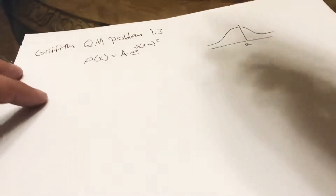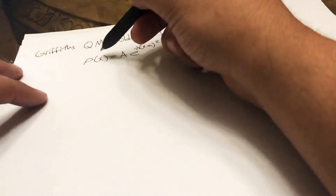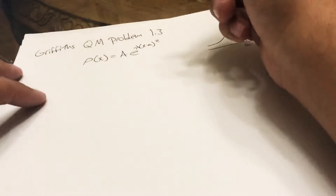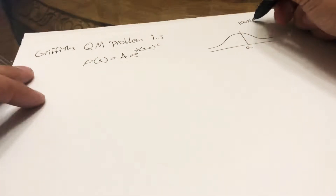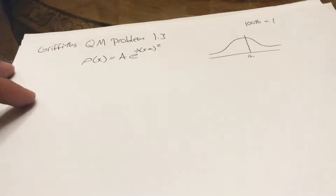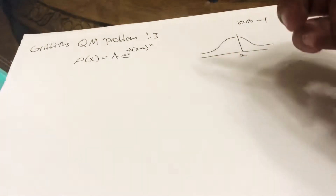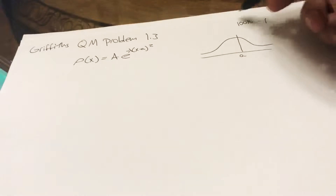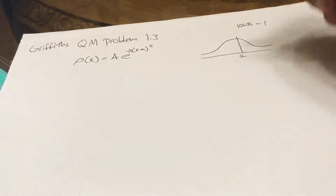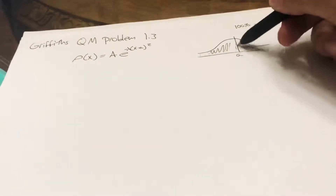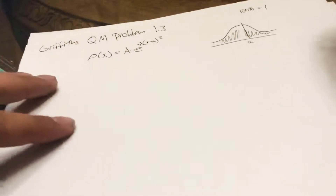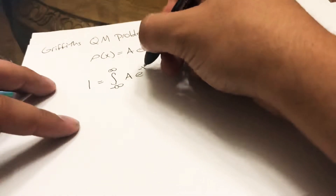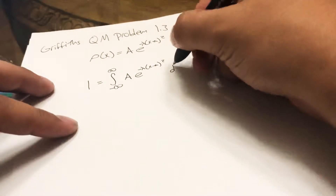What do we mean by normalization? Because this is a probability distribution, the sum of all probabilities has to equal 100%, which is one. Since this is a continuous distribution, we're going to have to integrate to find all of this equal to one. So we write: 1 = ∫ from -∞ to ∞ of A·e^(-λ(x-a)²) dx.